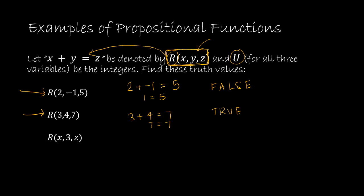For the last example R(x,3,z) is still considered a propositional function. This is not a proposition because remember to go from a propositional function to a proposition means I have to give values to each variable and we can see here that we have two variables that are not yet assigned so it is still considered a propositional function.